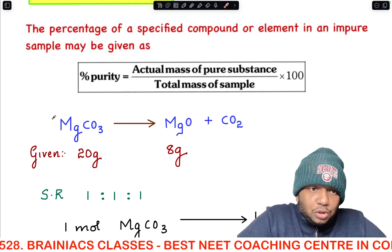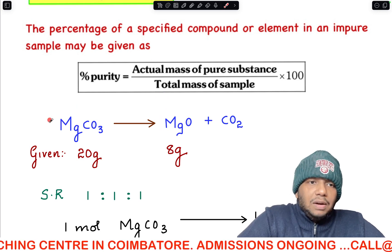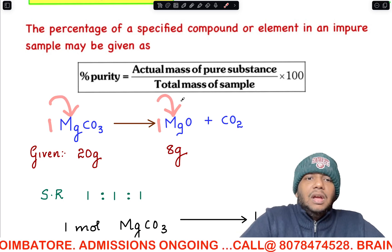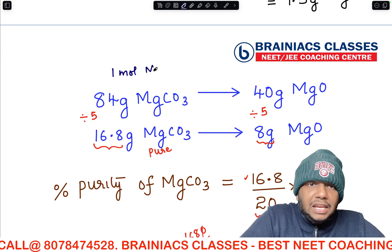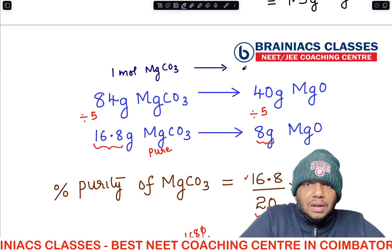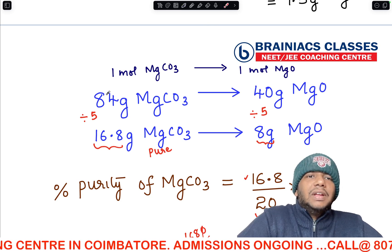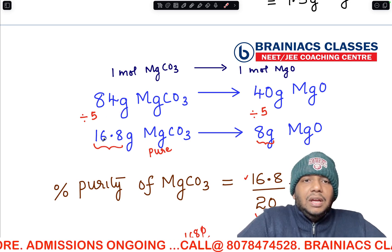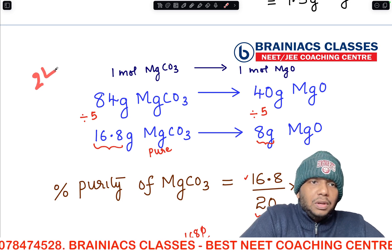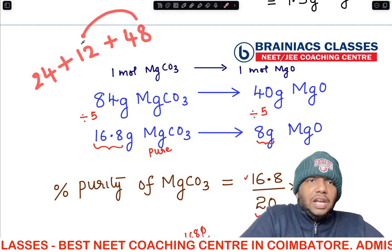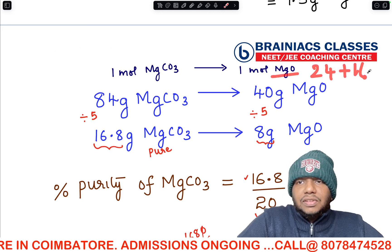From stoichiometry: MgCO₃ → MgO + CO₂, where 1 mol MgCO₃ produces 1 mol MgO. Molar mass of MgCO₃: Mg = 24, C = 12, O = 16 × 3 = 48; total = 84 g/mol. Molar mass of MgO: Mg = 24, O = 16; total = 40 g/mol. Therefore, 84 g MgCO₃ produces 40 g MgO.